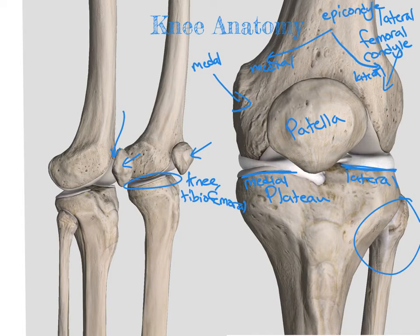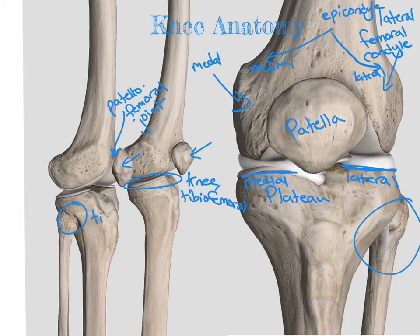Between the patella and the femur, we have our patellofemoral joint. And then between our tibia and our fibula, we have our tibiofibular joints — one at the proximal end and one at the distal end. So this would be our proximal tibiofibular joint.